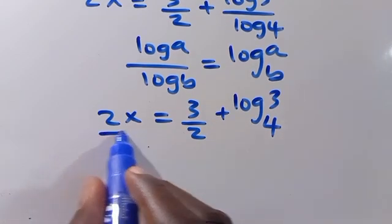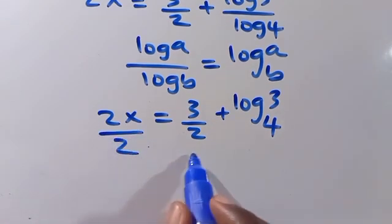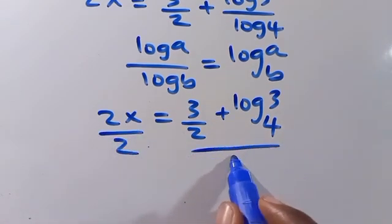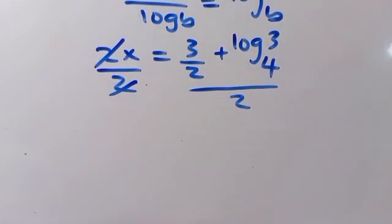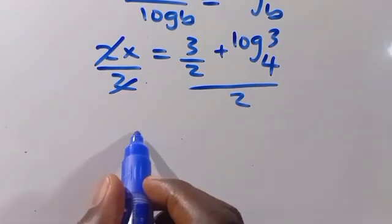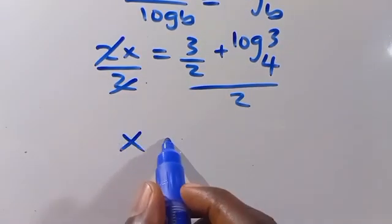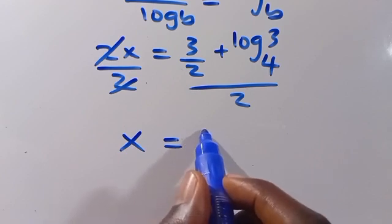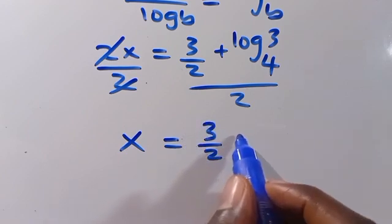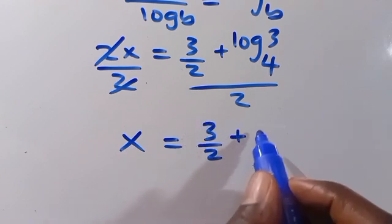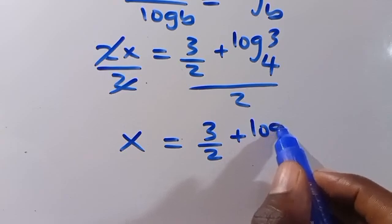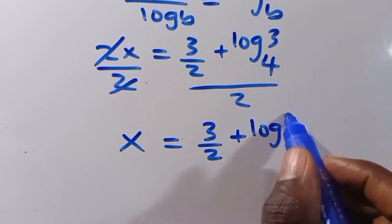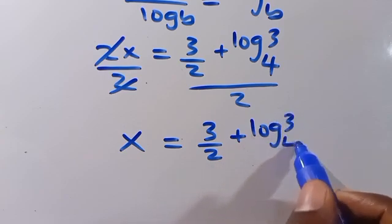Recalling that log a over log b equals log a in base b, we have 2x equals 3/2 plus log 3 in base 4. Dividing through by 2, x equals 3/4 plus (1/2) log₄3.